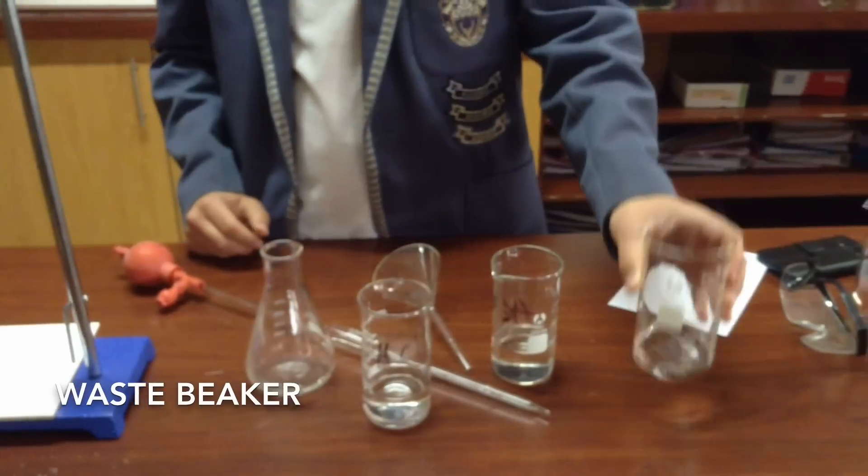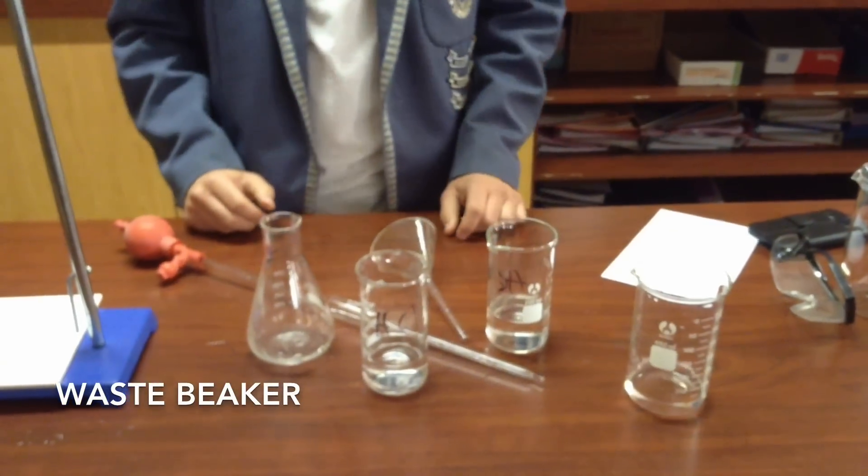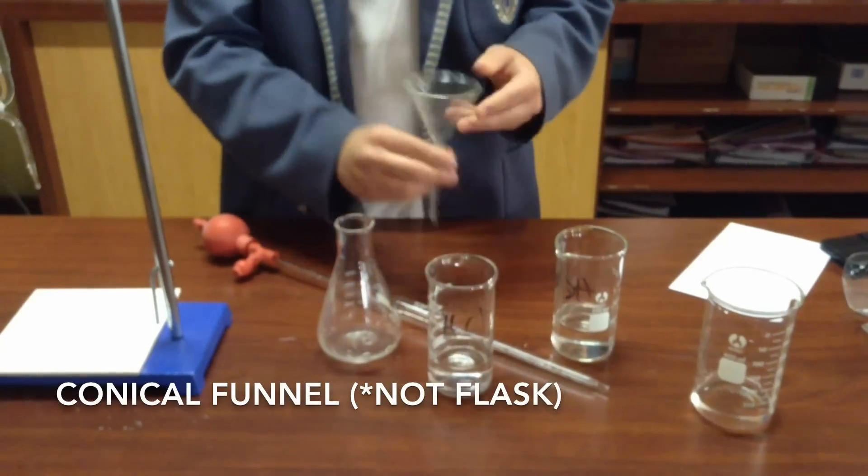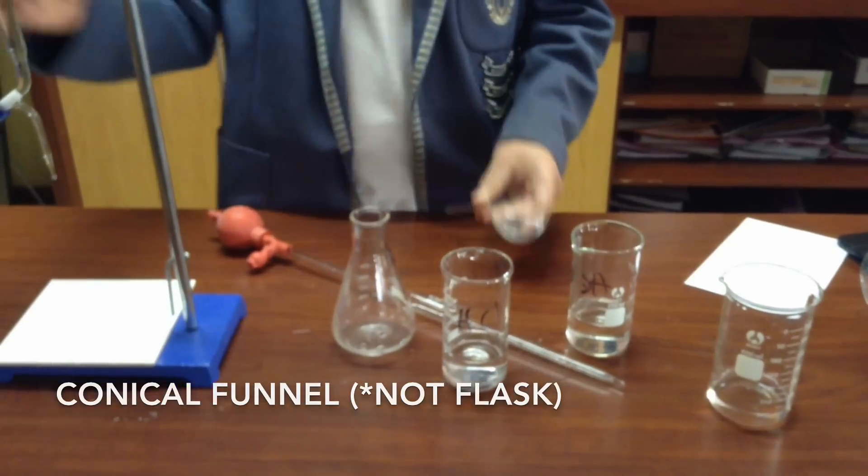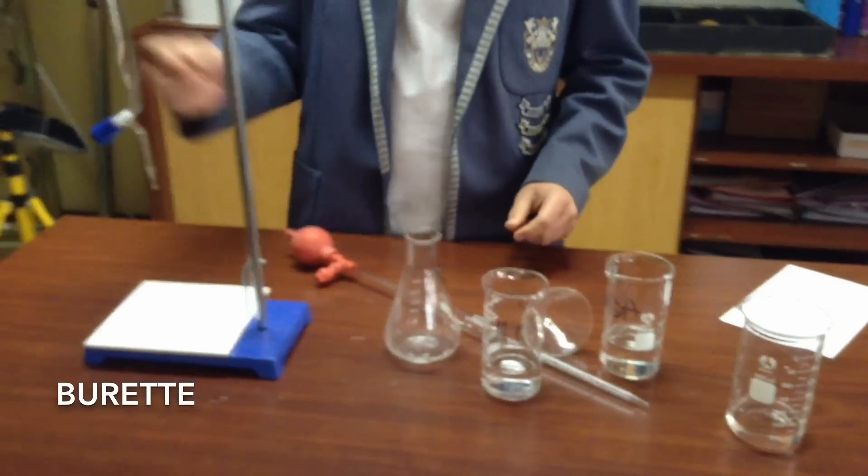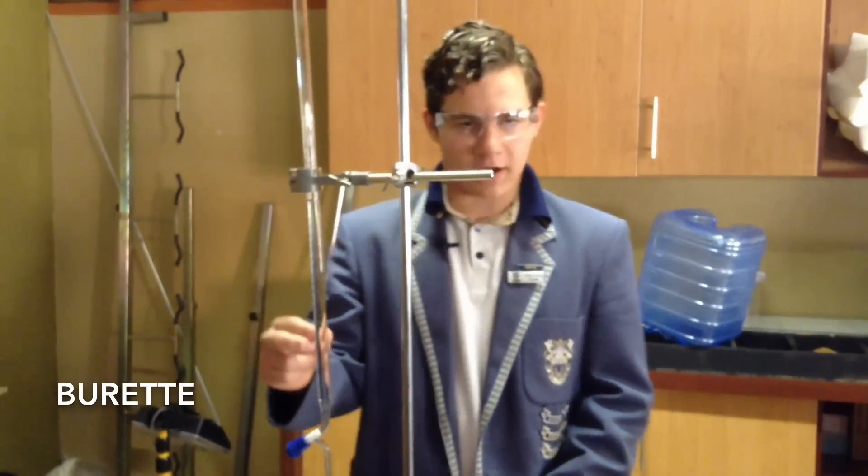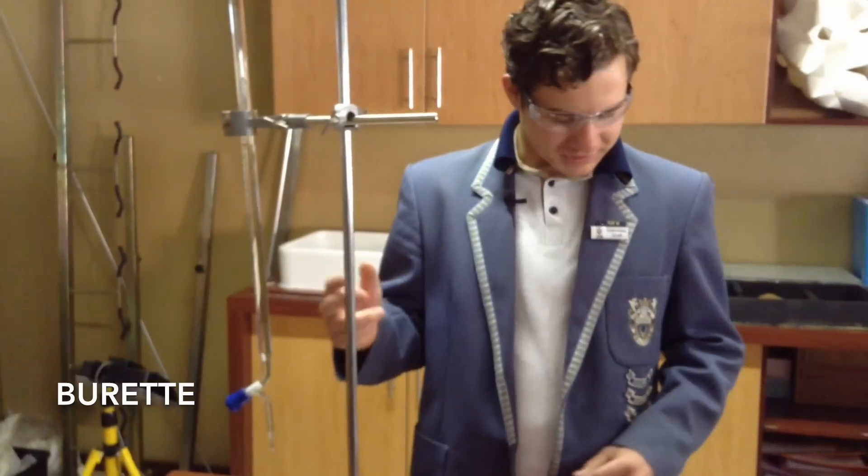You're also going to need a beaker for your waste for when you finish your titration. You're also going to need a conical flask which we're going to use with the burette. Then you'll need a burette, and the burette we're going to fill with our titrant.